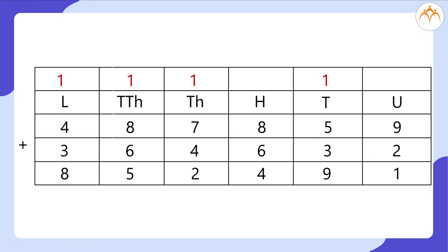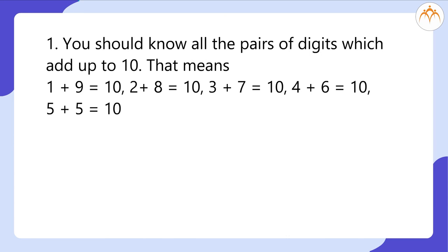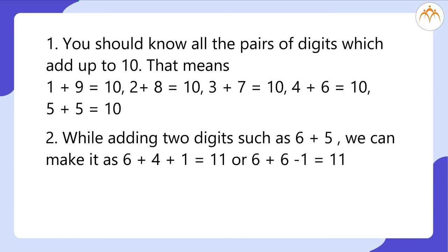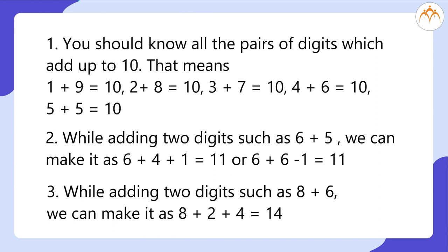There are a few simple tricks while adding two single digits. You should know all the pairs of digits which add up to 10: 1 plus 9, 2 plus 8, 3 plus 7, 4 plus 6, and 5 plus 5 all equal 10. While adding digits such as 6 plus 5, we can make it 6 plus 4 plus 1 equals 11, or 6 plus 6 minus 1 equals 11. While adding 8 plus 6, we can make it 8 plus 2 plus 4 equals 14.